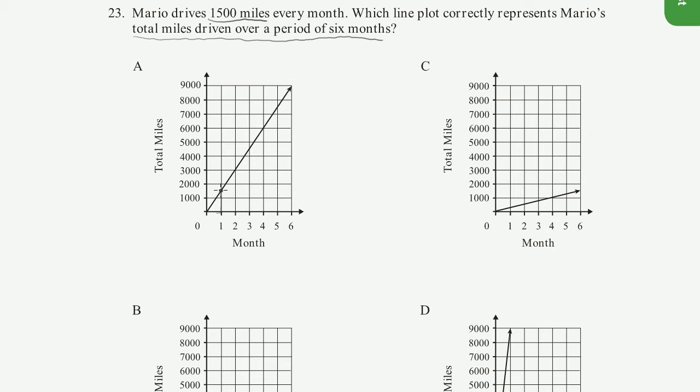after one month, he should drive 1,500 miles, and that looks pretty good there. So after another month, it should be another 1,500, which gets to 3,000, right? After two months, he should drive 3,000 miles. So so far, choice A looks pretty good. So I'm just going to circle that,